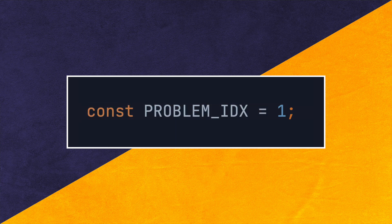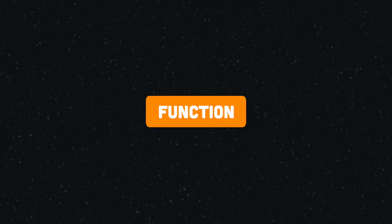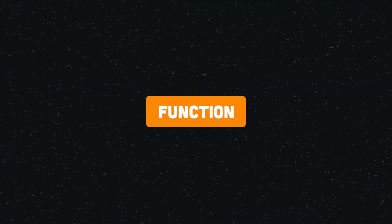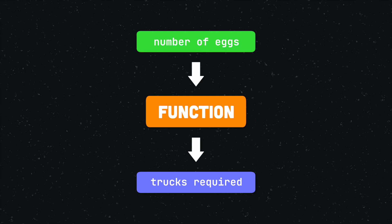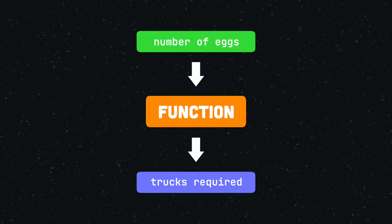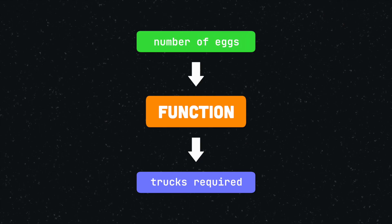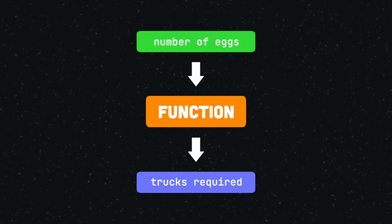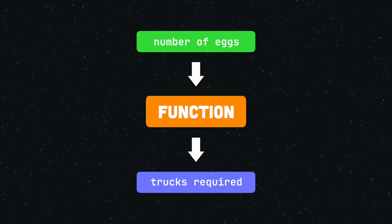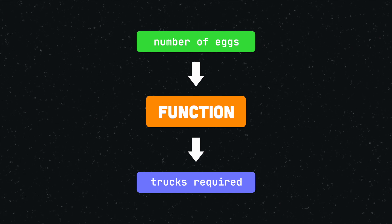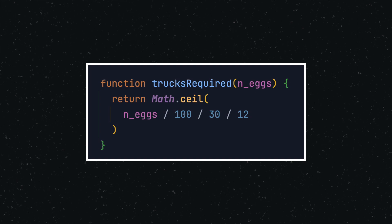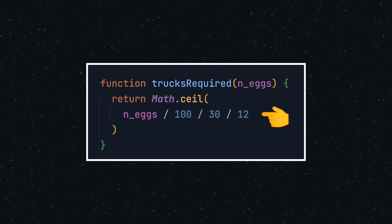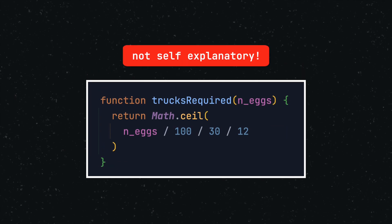Let's visualize this with a simple example. Say we want to create a function that calculates how many trucks are required to transport a given amount of eggs. Assuming that we know how many eggs fit in a carton, how many cartons fit in a box, and how many boxes fit in a truck, we can create the following function. If you wonder what the numbers mean, you have just confirmed the first reason why magic numbers are problematic.